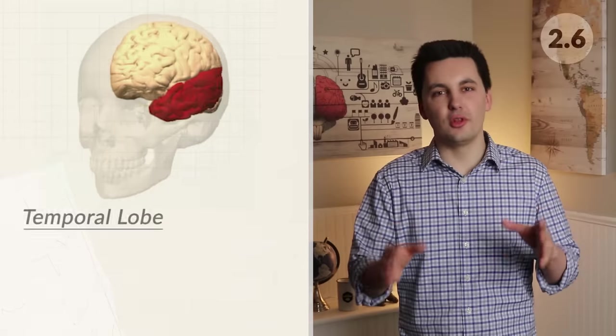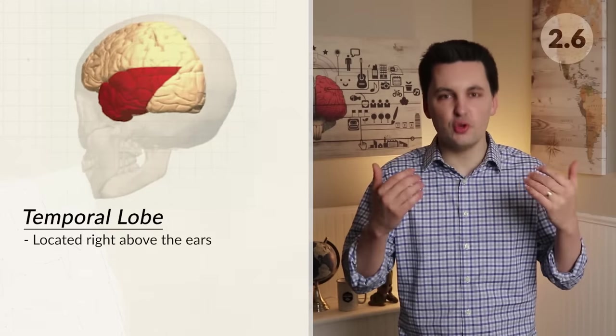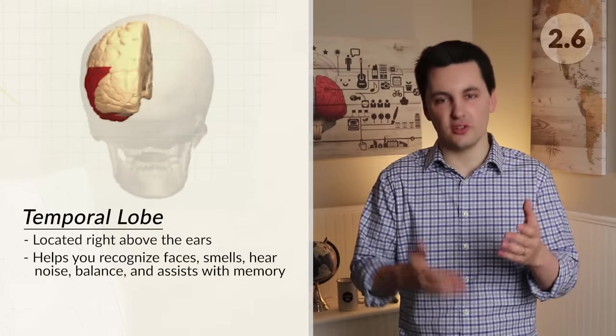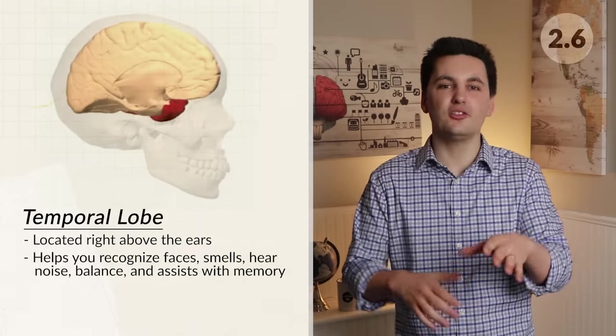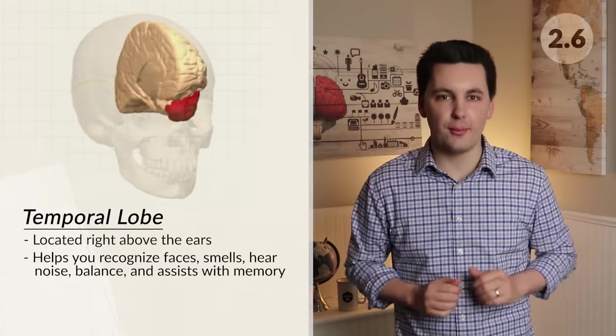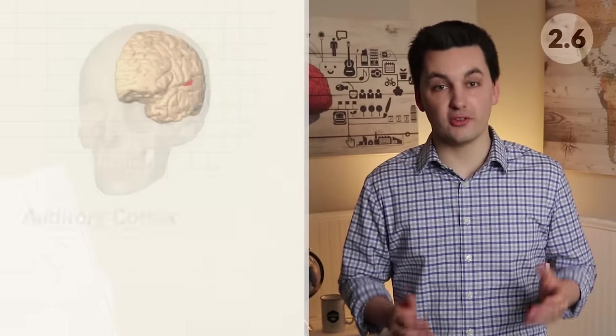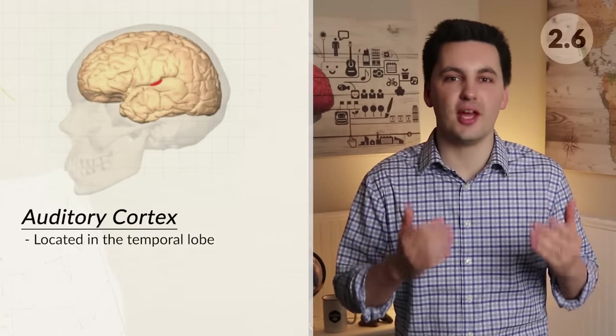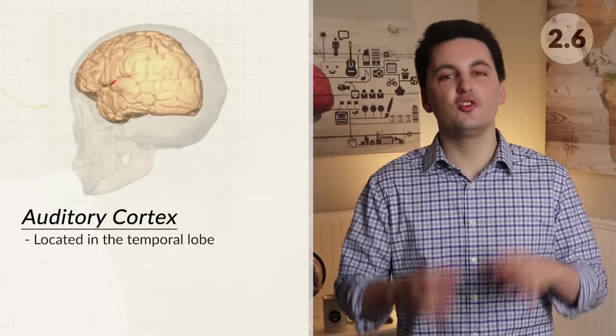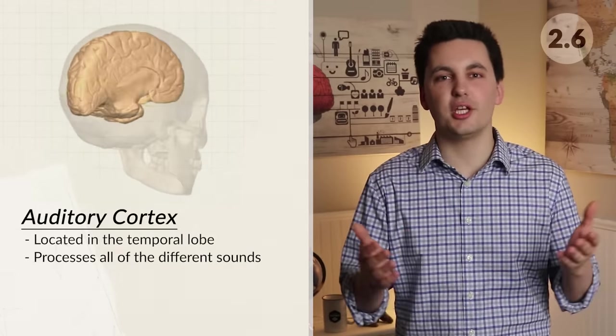The temporal lobe is located right above your ears. This helps you recognize faces, smell, hear noises, maintain balance, and assist with memory. This is also where Wernicke's area is located. Also located in the temporal lobe is the angular gyrus, which allows you to read words on a paper and transfer that information into an auditory form. There's also the auditory cortex in the temporal lobe, which processes different sounds that you hear.